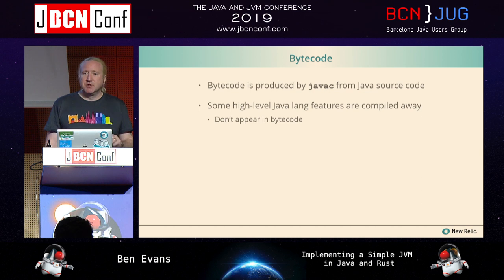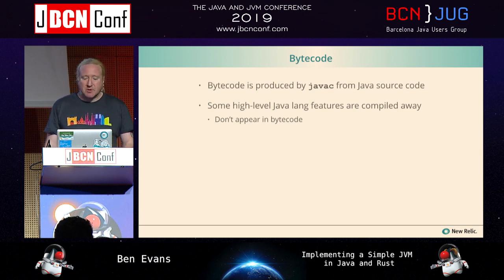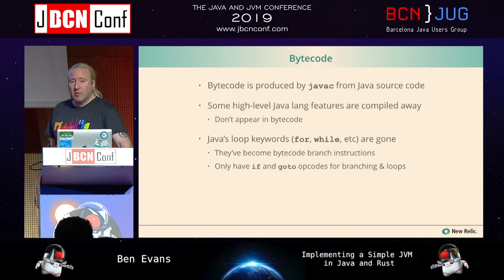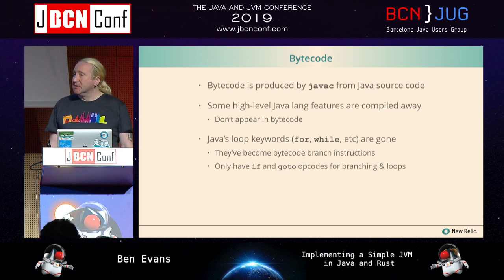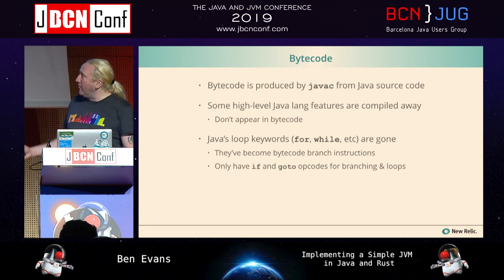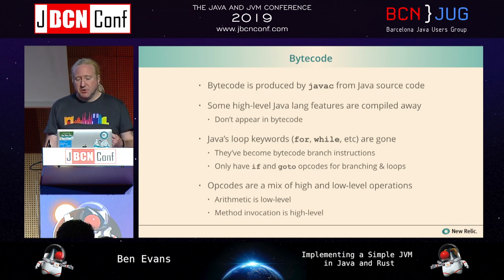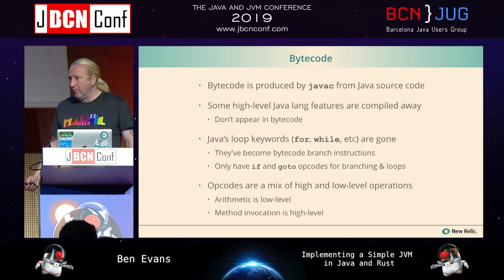Some high-level features of the Java language are compiled away. It is not possible to exactly reconstruct a Java program precisely in all cases from the bytecode — information is lost in that transformation. For example, the loop keywords 'for' and 'while' are gone — there's no such thing as a for or while in Java bytecode. Instead we have if-opcodes and goto-opcodes — just branching and loops.